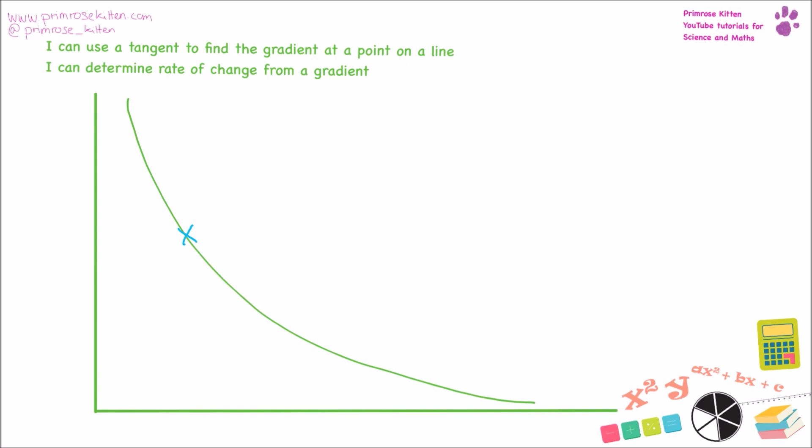You need to be able to use a tangent to find the gradient at a point on a line because in real life it is very rare that we actually get straight line graphs. So here we have our curve line and we want to find the gradient, the rate of change at this point here. So what you need to do is you need to get your ruler and you need to draw a straight line exactly at that point. You will see that this line here is not the gradient for any other point on this line. And then from this straight line that you have done, you can then use that to work out the gradient of the line. When you're working out the gradient of the line, bigger triangles, the better. And we need to do changing up by changing across.